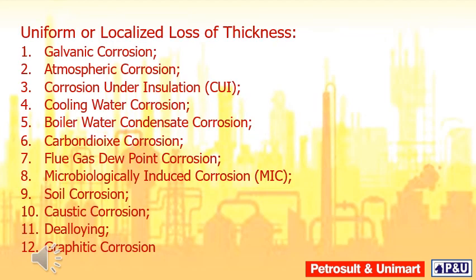Uniform or localized loss of thickness mechanisms include: galvanic corrosion, atmospheric corrosion, corrosion under insulation, cooling water corrosion, boiler water condensate corrosion, carbon dioxide corrosion, flue gas dew point corrosion, microbiologically induced corrosion, soil corrosion, caustic corrosion, dealloying, and graphitic corrosion.